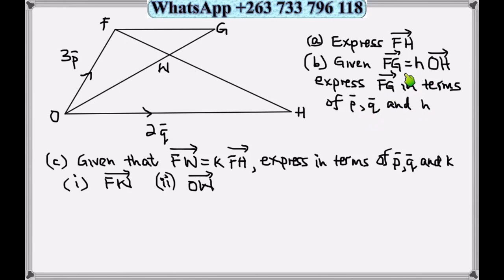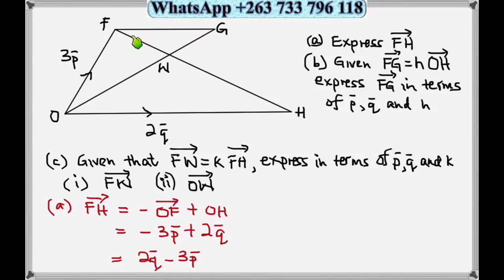This means we will use a constant here as mentioned. So for part a, from F to H, we go the direction opposite the arrow, so we are subtracting minus 3p. Then we go the same direction with the arrow, so we are adding 2 vector q. So this will be our answer: 2q - 3p. You can rearrange and start with the positive, then with the negatives.